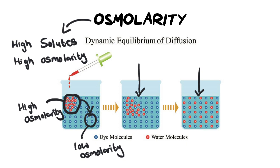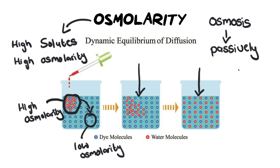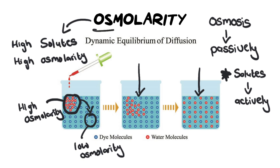When we talk about water movement in terms of osmolarity, we describe it as osmosis — water moving passively. However, solutes don't move passively; they move actively, meaning they need energy to move. We'll talk more about this active movement in the sodium potassium pump video. For now, we'll focus on the general idea of how we move water out of the loop of Henle using osmolarity — solutes distributing from high to low concentration.